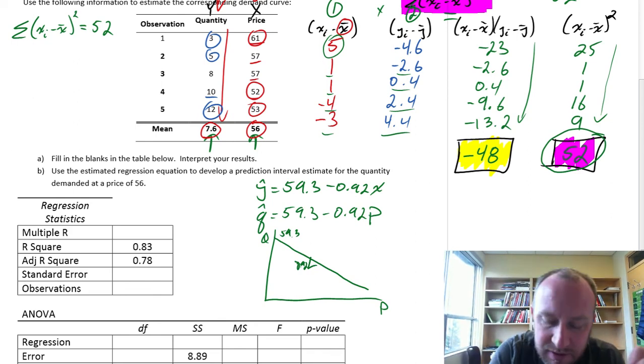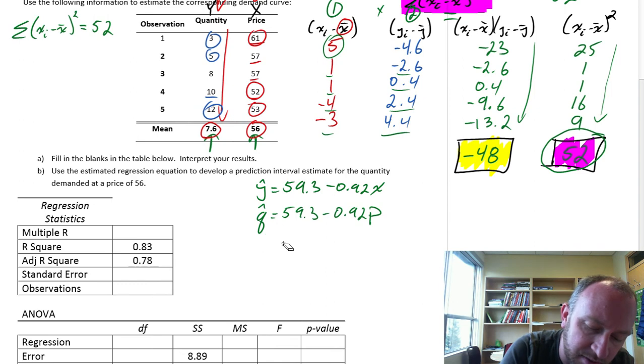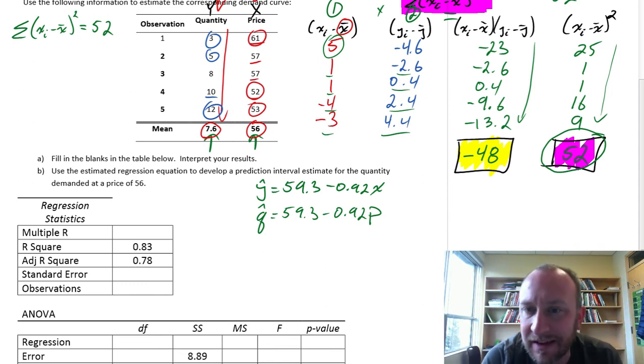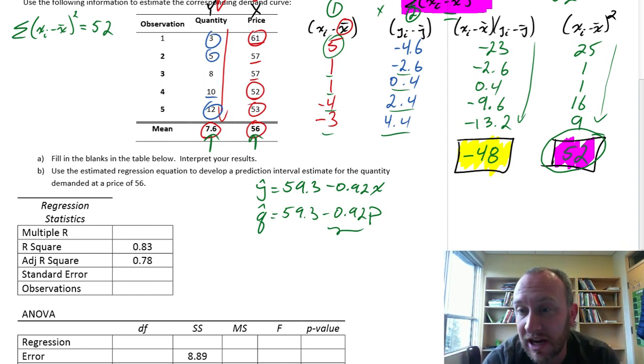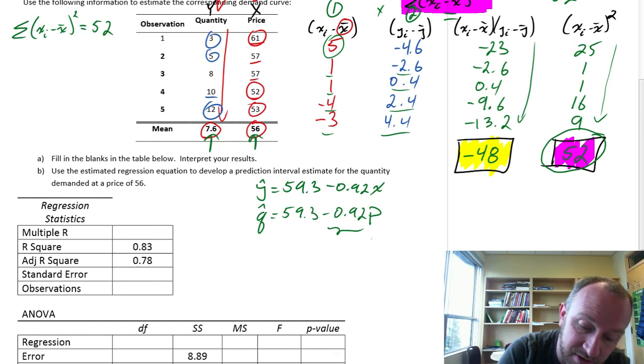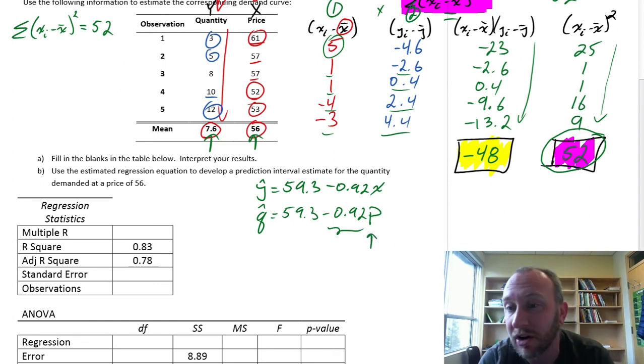What can we do with this? We can use it for estimation. We can put in some value of price and estimate an average quantity demanded, or we're just interested in the value of this intercept. For every one dollar change in price, average quantity demanded declines by 0.92.